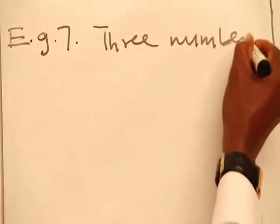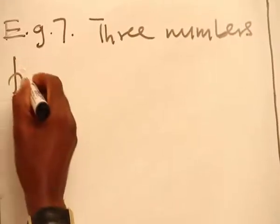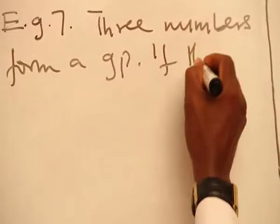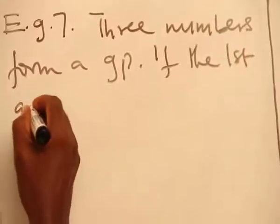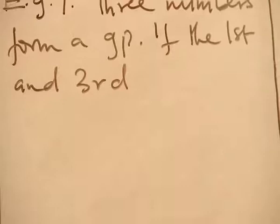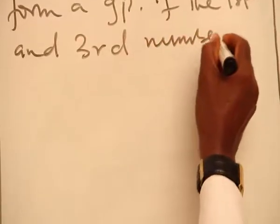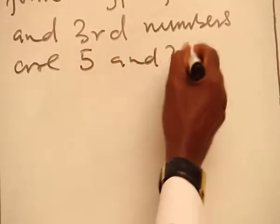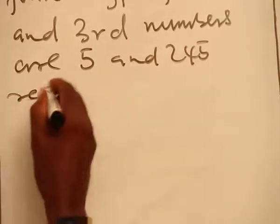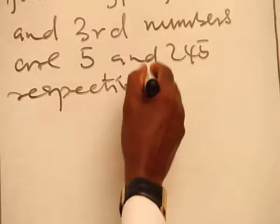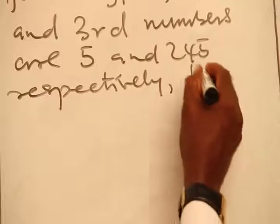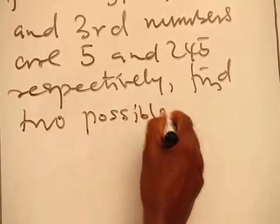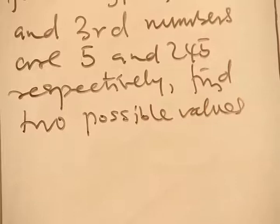Three numbers in geometric progression. If the first and the third numbers are 5 and 245 respectively, find two possible values for the median number.